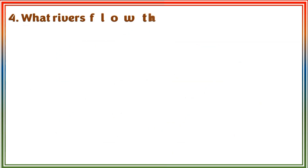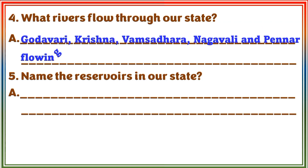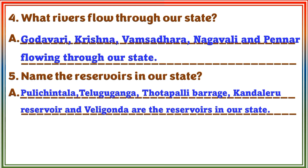Question 4: What rivers flow through our state? Answer: Godavari, Krishna, Vamsadhara, Nagavali and Pennar flow through our state. Question 5: Name the reservoirs in our state. Answer: Pulichintala, Telugu Ganga, Thotapalli Barrage, Kandaleru Reservoir and Veligonda are the reservoirs in our state.